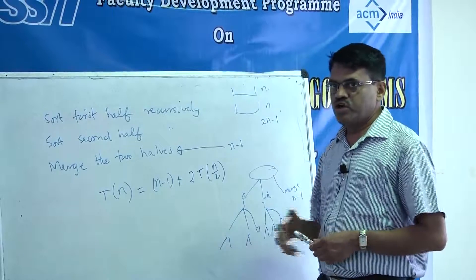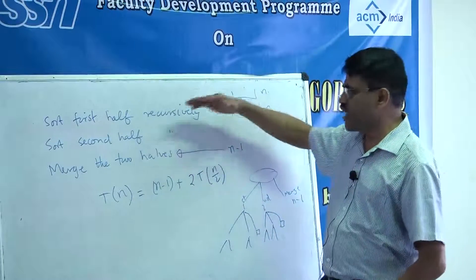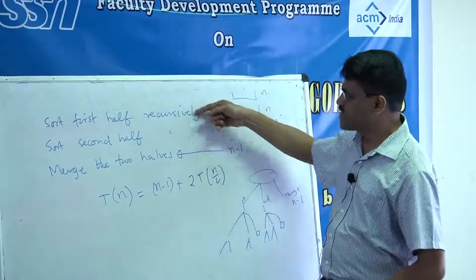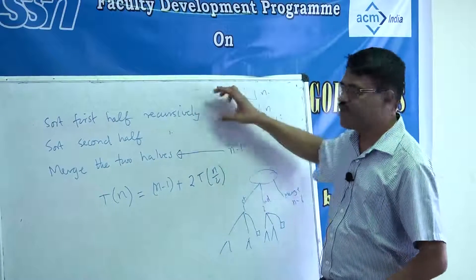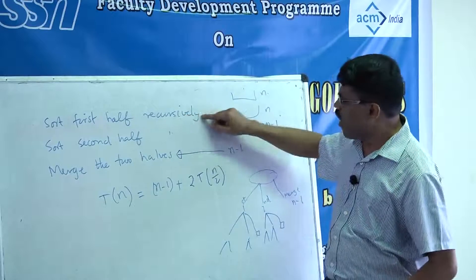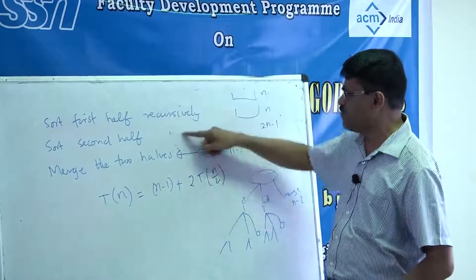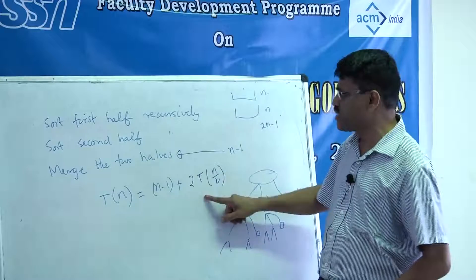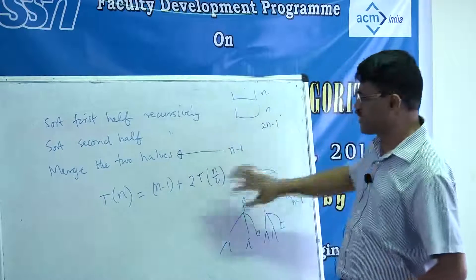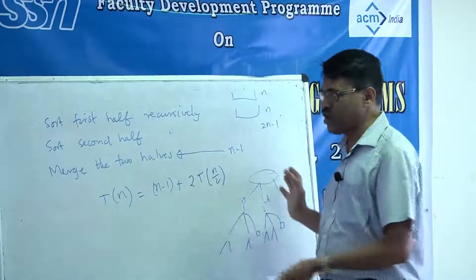The moral of the story: algorithms are important, complexity is important, you need to understand it. It is not just N log N and N squared theory to memorize — your career could be at stake. You really have to understand when an algorithm is exponential.